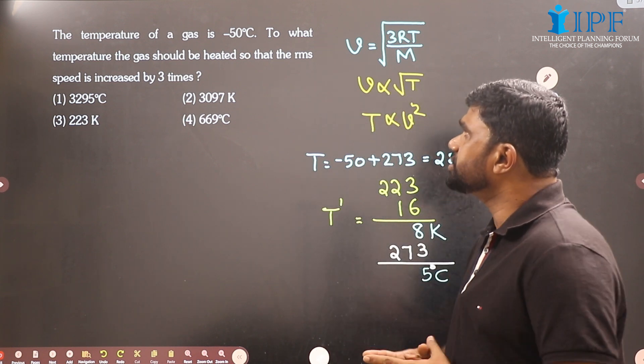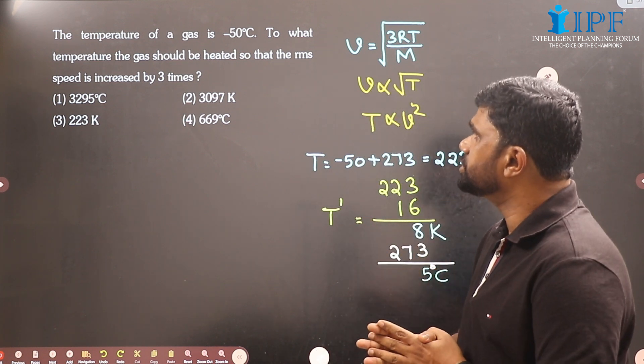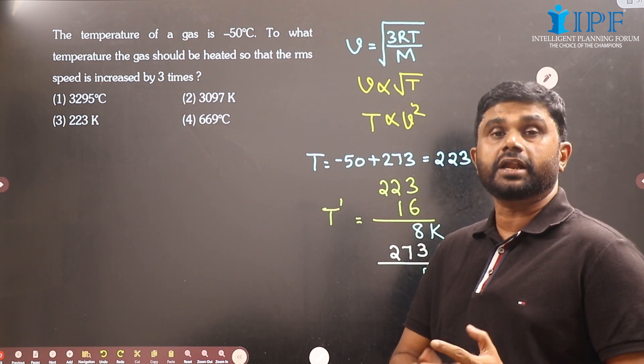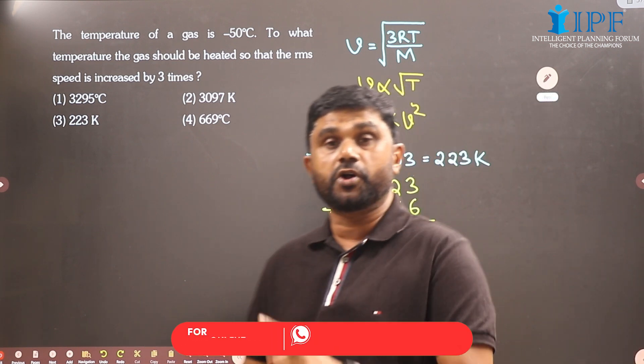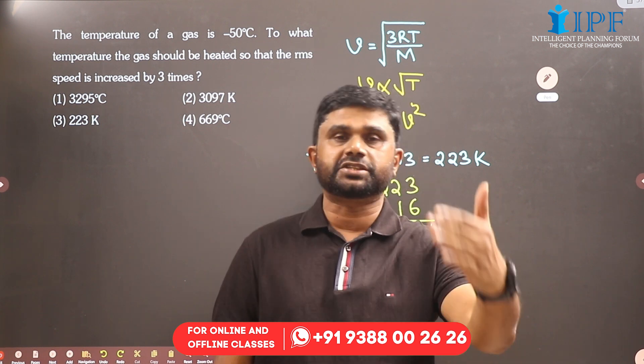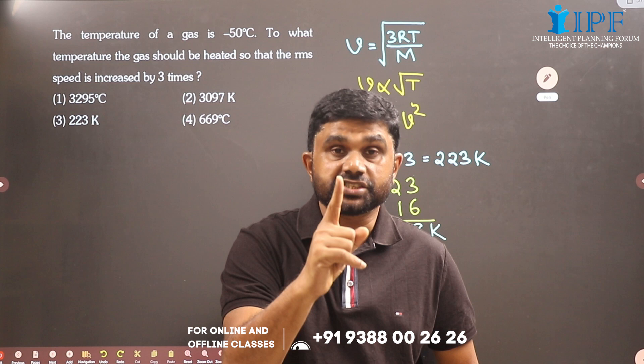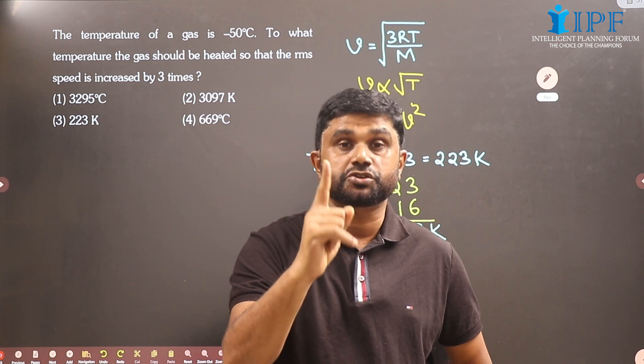The temperature of a gas is minus 50 degrees Celsius. To what temperature should the gas be heated so that the RMS speed of gas molecules is increased by 3 times? This means it becomes 4 times. This is a question from NEET 2023.